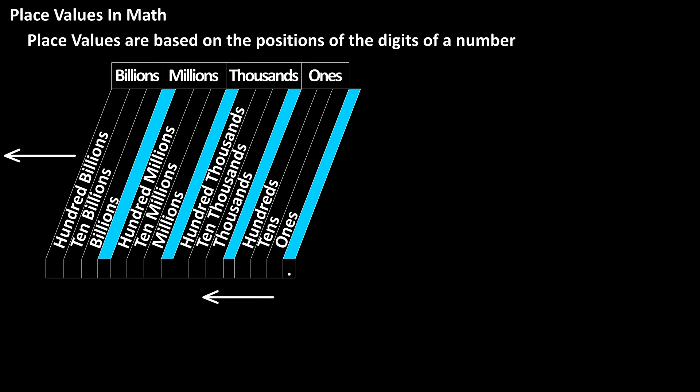Going right to left, we start with the ones column, then the tens, then the hundreds, thousands, ten thousands, and so on.